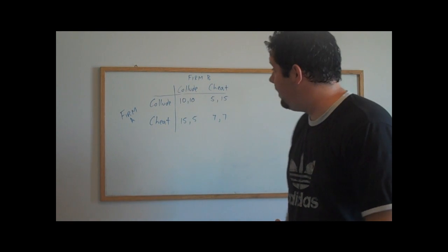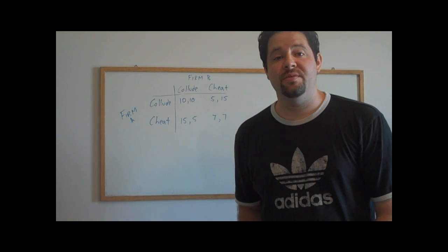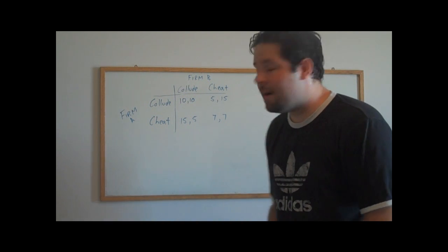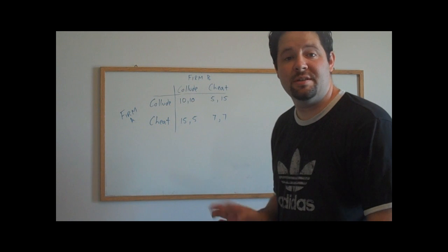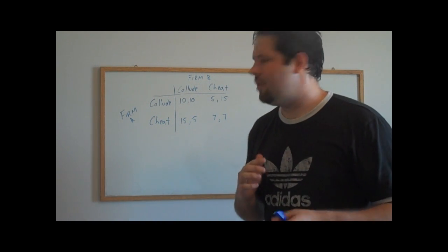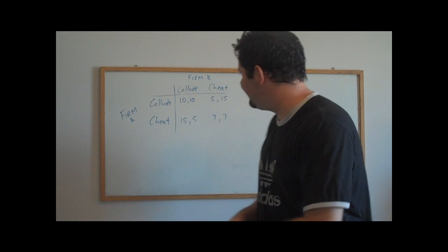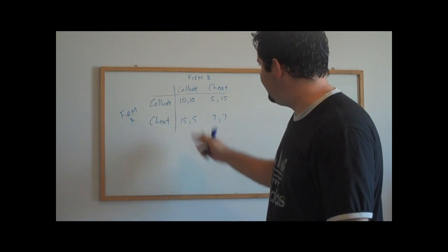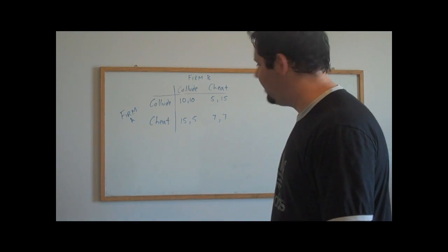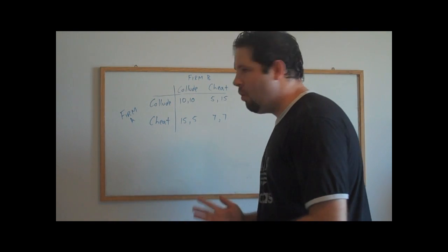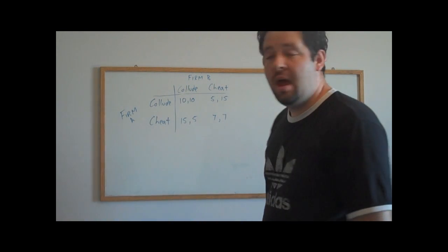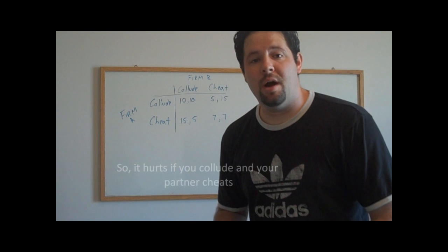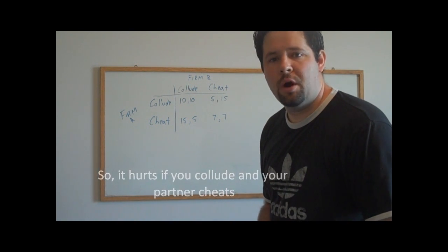So, imagine that there are two firms, and they've conspired in a price-fixing scheme. They're going to act as a cartel, act just like a monopolist together, and then split the profits. But they go home after striking this bargain, and they realize that they have one of two options. They can stick by their collusive agreement, and in this case we're going to say that they earn $10 million in profits if they stick by the collusive agreement. Or they can cheat on the agreement. If they end up cheating, they end up getting a bump in profits, and then essentially stealing some of the profits from their collusive partner.